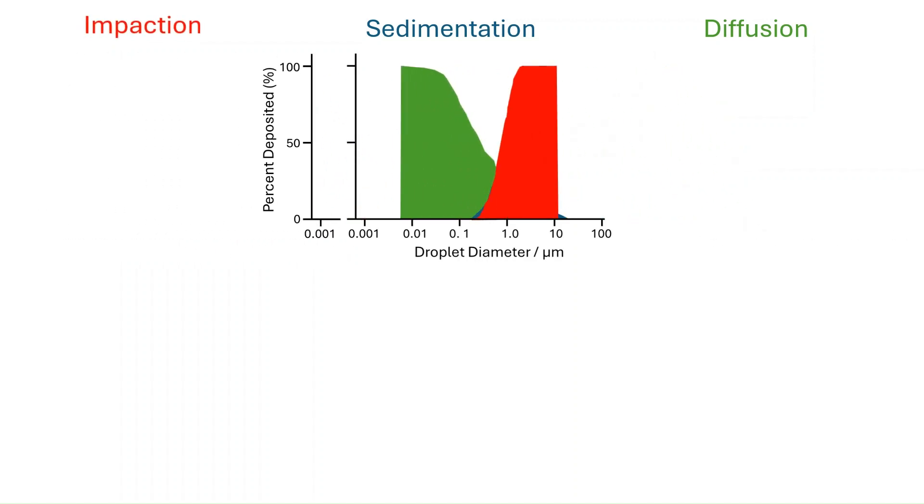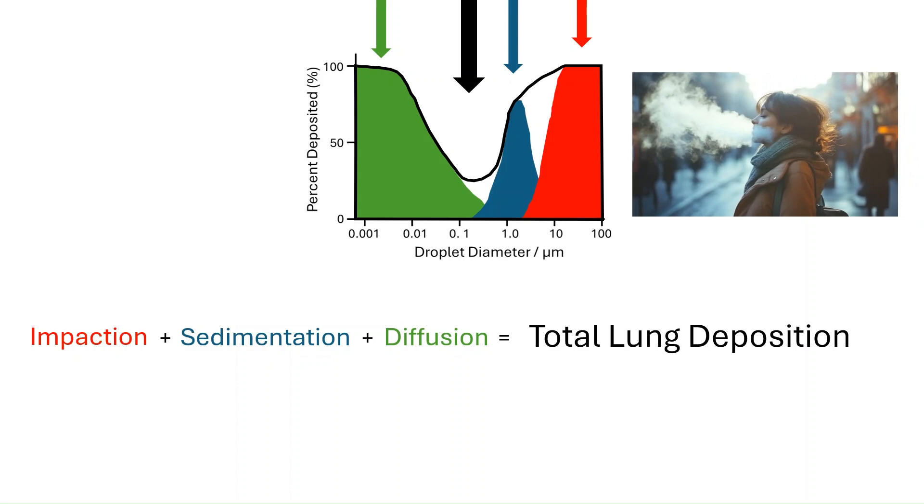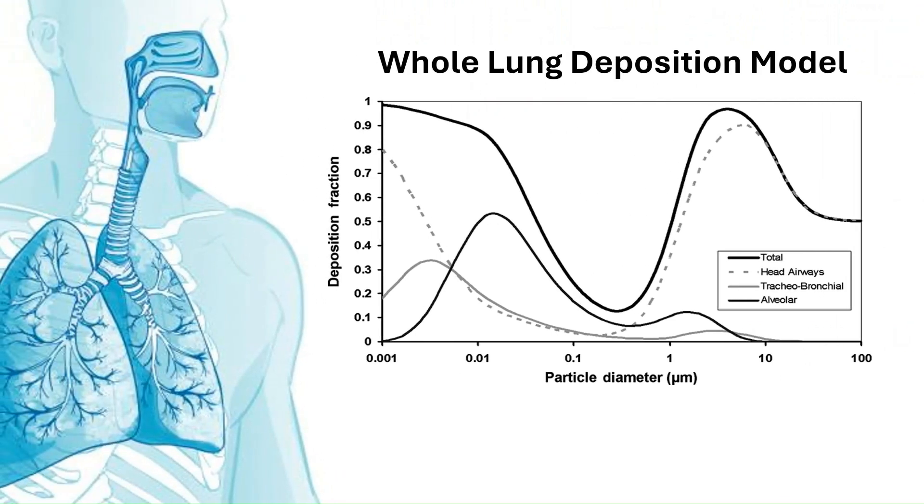And when we combine them and add the deposition fraction due to each mechanism up, we get the total deposition in the lungs. The area under the black line is the percent of the aerosol that deposits in the lungs as a function of their size. This unusual shape makes sense if you understand why the aerosol deposits at different sizes. The aerosol around 0.2 microns are too small to be deposited by sedimentation and impaction, and they are too large to be deposited by diffusion. And as a result, they're just simply exhaled.